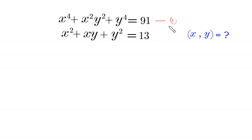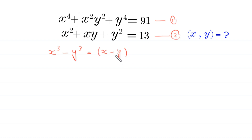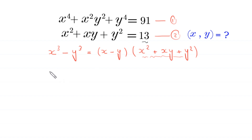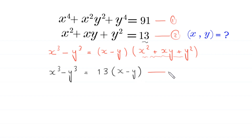Let us call this equation 1 and this equation 2. We use the algebraic identity x cubed minus y cubed is equal to x minus y times x squared plus xy plus y squared. We replace x squared plus xy plus y squared with the value 13, so this becomes x cubed minus y cubed is equal to 13 times x minus y. Let us call this equation 3.